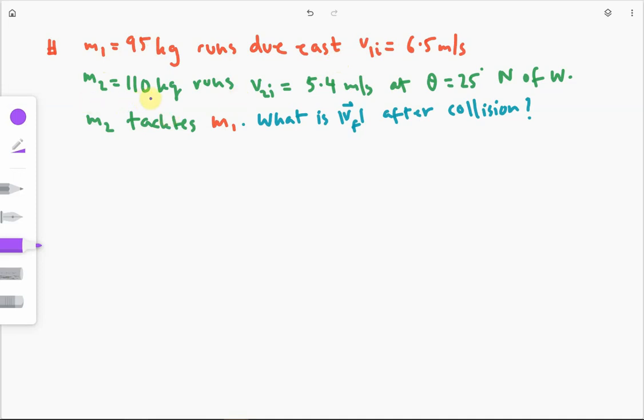The second player with a mass of 110 kilograms runs with a speed of 5.4 meters per second, denoted V2I, at an angle of 25 degrees north of west. Then player M2 tackles player M1 and we want to find what is the speed immediately after collision.